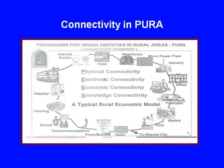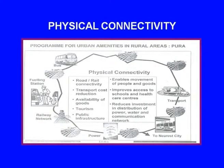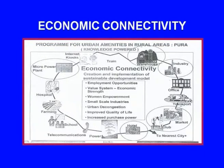There are four connectivities: physical, electronic, economic, and knowledge. Physical connectivity takes into consideration rail and road connectivity, allowing people to move goods, reduce transport costs, and improve access to schools, health and care centers, availability of goods, tourism, and public infrastructure. Economic connectivity focuses on employment opportunities, value system, economic strength, women empowerment, small-scale industries, urban decongestion, improved quality of life, and increased purchasing power.